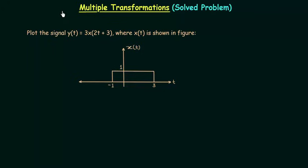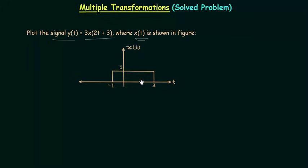Let's solve one problem based on multiple transformations of continuous time signals. In this problem we need to plot the signal y(t) which is equal to 3x(2t+3). The plot of signal x(t) is already given in the problem and by using this plot we need to plot the signal y(t).